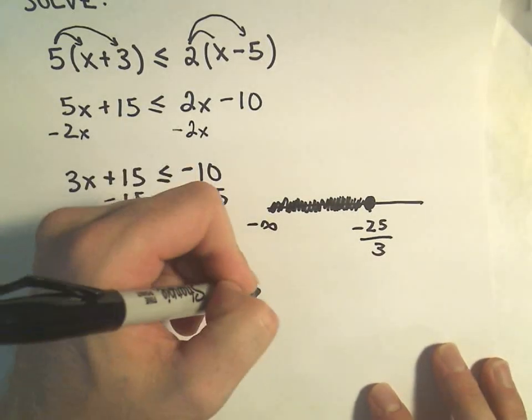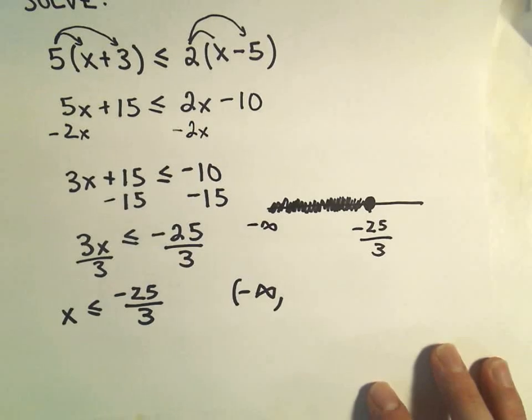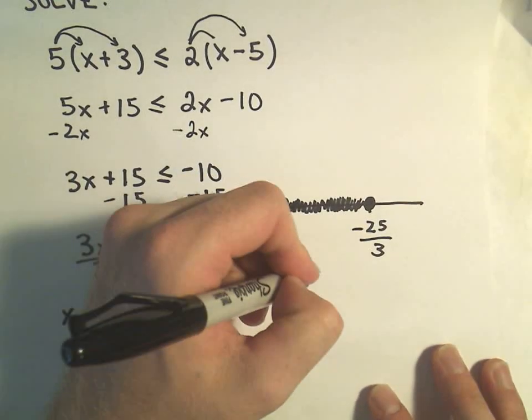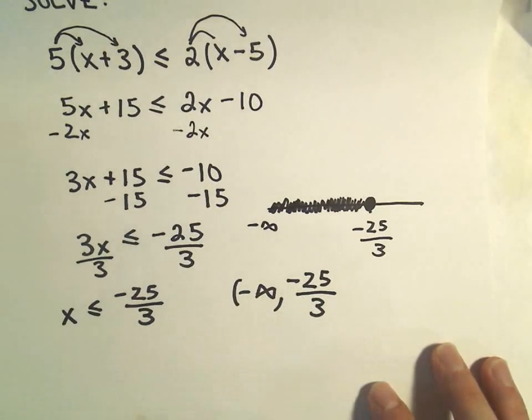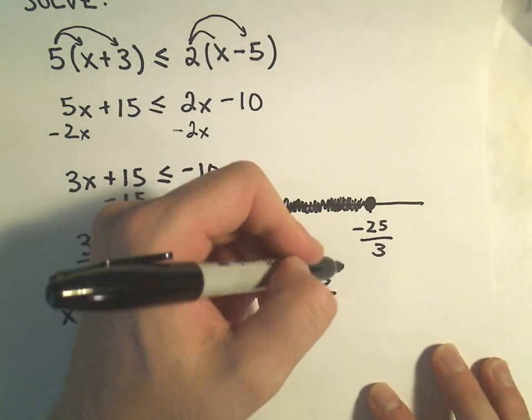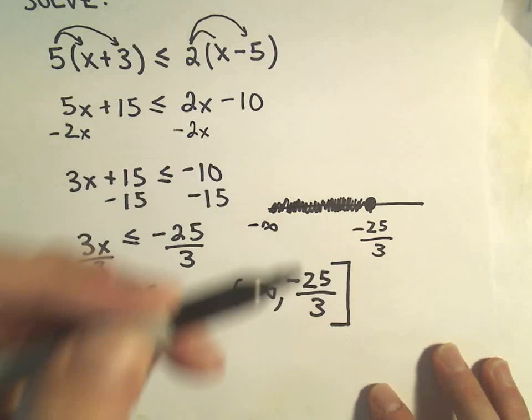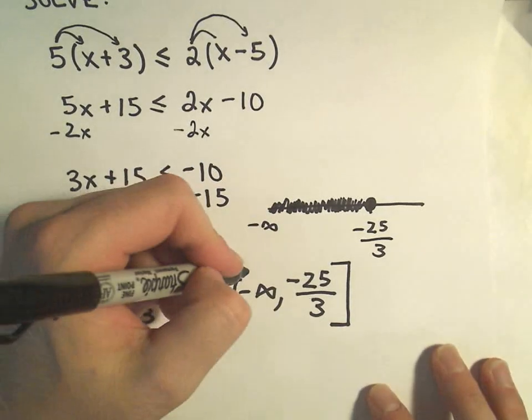So if we write this in interval notation, we'll write a little parenthesis around our negative infinity. And then we have negative 25 over 3. And since we can use that number, the notation is we put a little bracket around that number to indicate that we can use it.